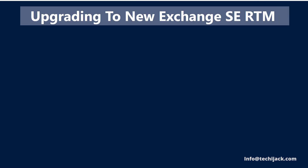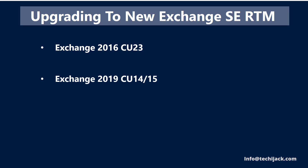Let's see how we can upgrade to the new Exchange SE RTM. Assuming you are running Exchange 2016, you should be on the latest CU23, and if you have Exchange 2019, it should be on CU14 or CU15. There are two types of upgrades available. The first is a legacy upgrade — the traditional way of moving to a new version of Exchange, where you introduce a new server, move all mailboxes and resources to it, then remove the old servers. Legacy upgrades are required when moving from Exchange 2016 to Exchange 2019, or from Exchange 2016 to Exchange Server Subscription Edition.